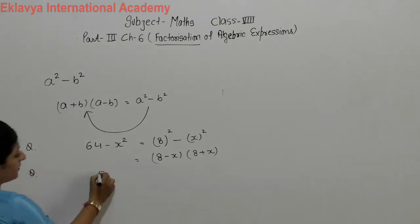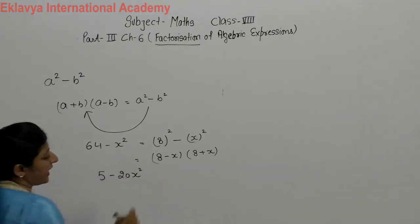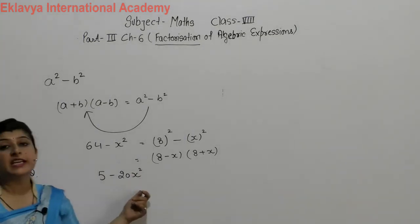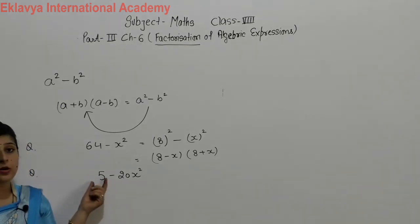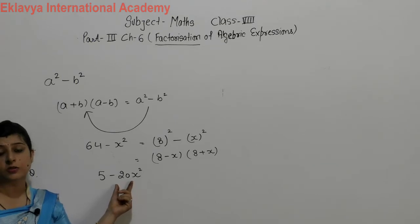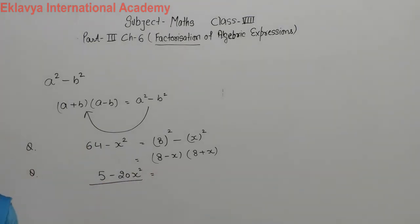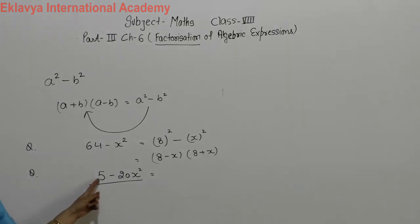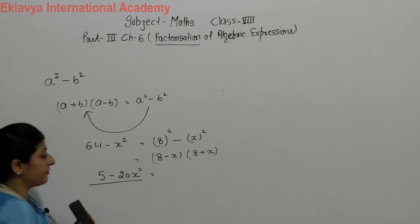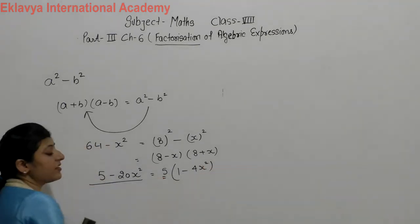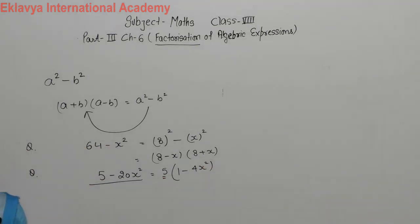Now suppose you are given 5 minus 20x² — do the factorization. If you look directly, 5 is not a perfect square and 20 is also not a perfect square. So what we do is: whenever we want to find the factors, firstly check if anything is common. If you see properly, we can take out 5 as common, giving 5 multiplied by (1 - 4x²). So 5 is one factor of the given expression.